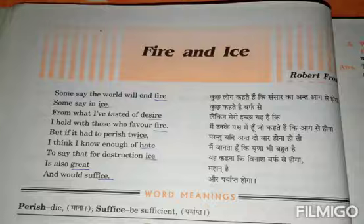Now let's talk about the rhyming scheme of the poem. The rhyming scheme of the poem is A-B-A, A-B-C, and B-C-B. Listen once again: A-B-A, A-B-C, and B-C-B.